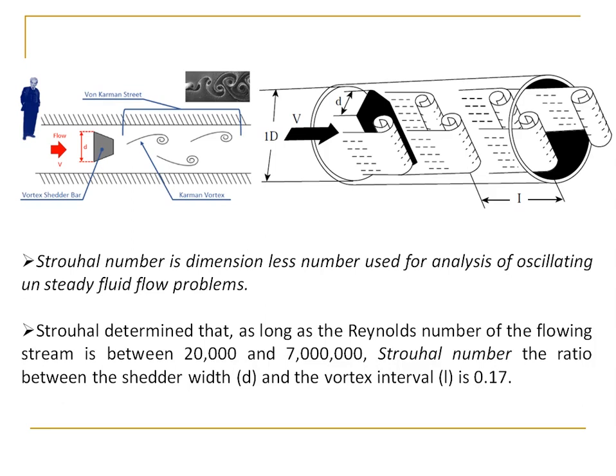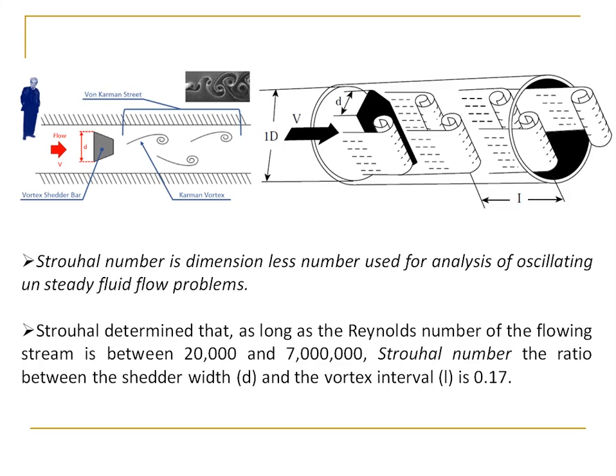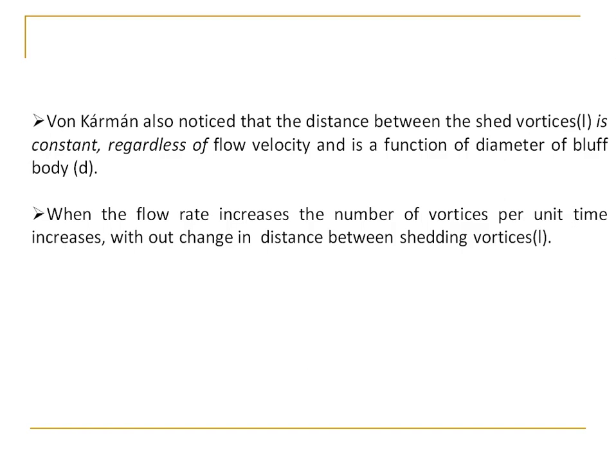The Strouhal number is the ratio of the bluff body width to the vortex interval — the interval between the vortices forming on the downstream side of the bluff body. Von Kármán also noted that this distance between shed vortices is constant and independent of flow velocity; it is only a function of the bluff body diameter. When flow rate increases, the number of vortices per unit time — the frequency — increases without any change in the distance between shedding vortices.